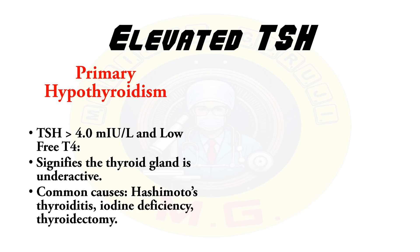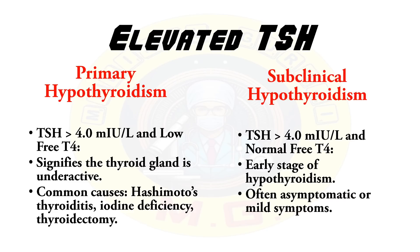Elevated TSH levels are found in primary hypothyroidism, where the TSH level is more than 4 milli-international units per litre and low free T4. It signifies the thyroid gland is underactive. Common causes of these findings are Hashimoto's thyroiditis, iodine deficiency, and thyroidectomy.